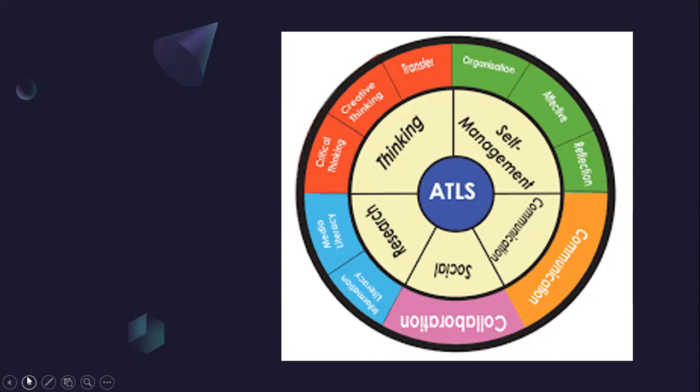Thinking includes critical thinking and creative thinking. Even the transferring of knowledge is perceived as a thinking skill. Self-management includes organization, effectiveness, and reflection. Communication is your ability to communicate your ideas and perspectives in a logical, coherent manner. Social collaboration means to collaborate with your peers or with your community. It is also expected in Grade 8 that you will be performing a community project, and in the community project you'll be focusing on all the ATLs at once.